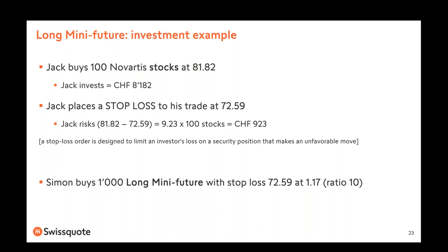Simon has the same view as Jack but wants to use leverage, so he decides to buy one thousand mini futures. Why one thousand? Because the ratio is ten, so instead of buying one hundred stocks, you buy one hundred times the ratio, which equals one thousand. When you buy a mini future, you select the stop loss level. The market price of the mini future is one point seventeen, so the investment is one thousand one hundred seventy Swiss francs — seven times lower than Jack's investment.